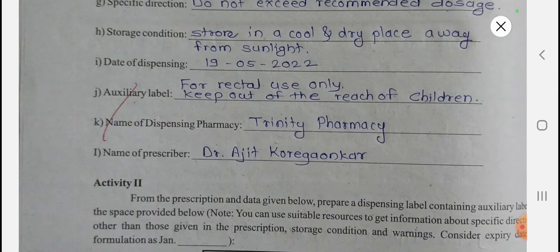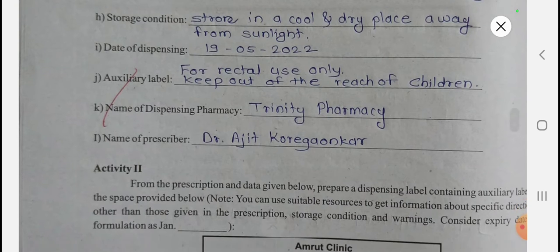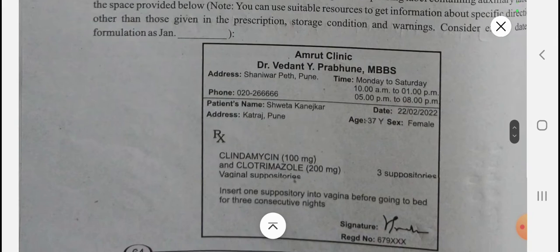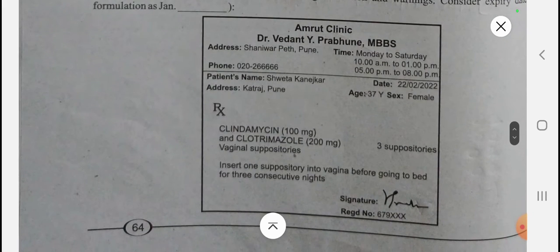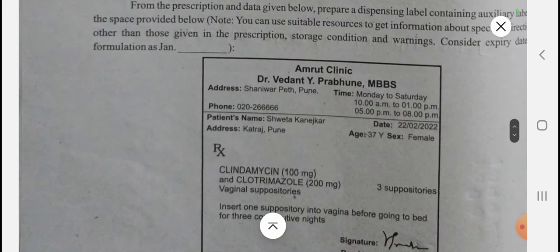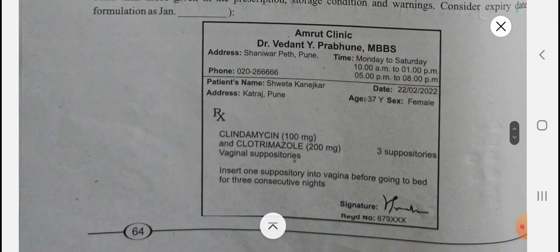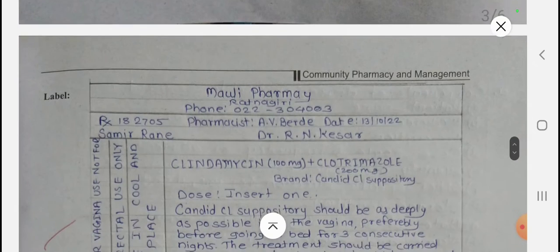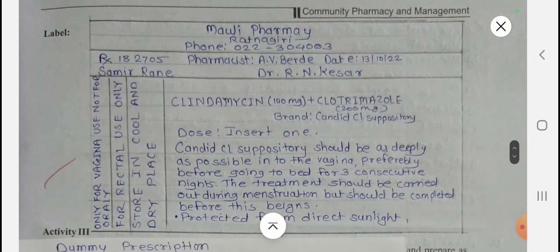That completes Activity 1 — identifying label components. Now for Activity 2: from the prescription, you have to prepare a dispensing label that also contains the auxiliary label. A label is provided which you can screenshot. The pharmacist's name is given. The medicine is Clindamycin plus Clotrimazole 200mg, with the brand name Candid CL suppository.